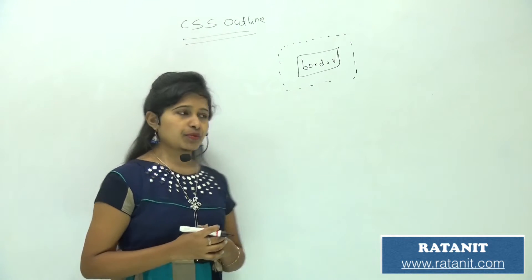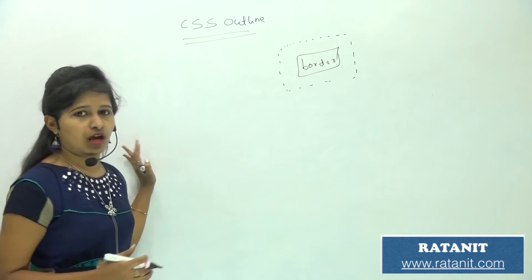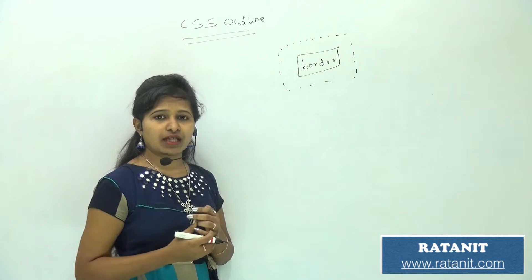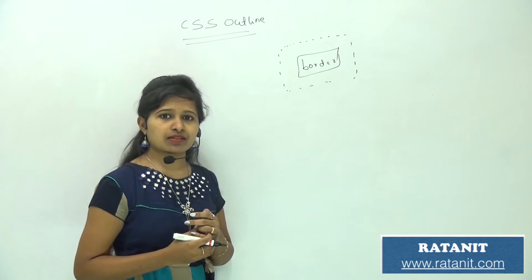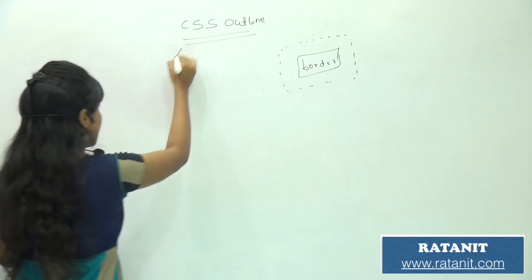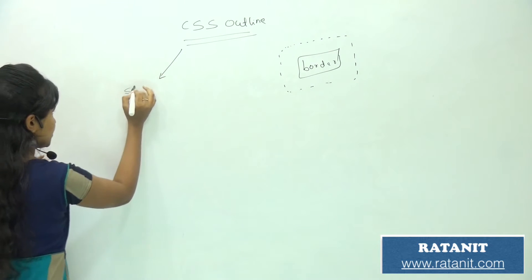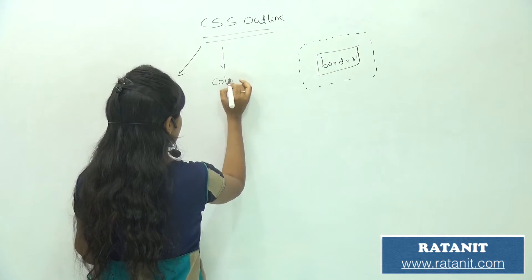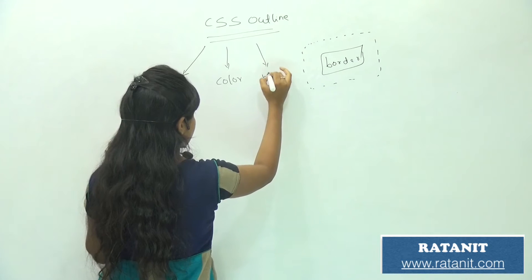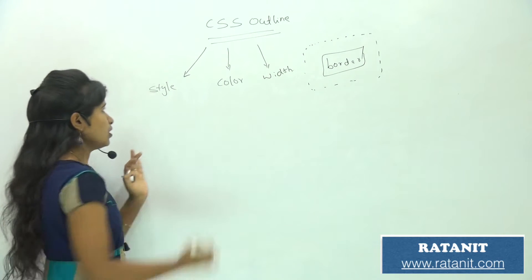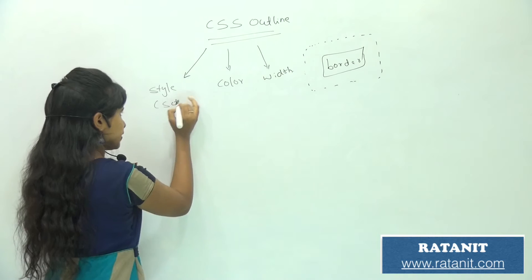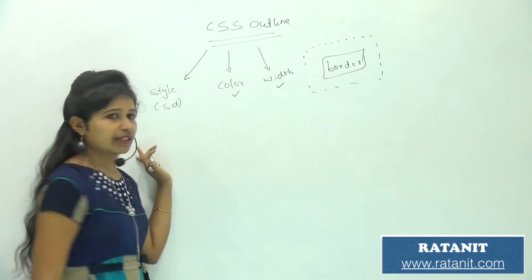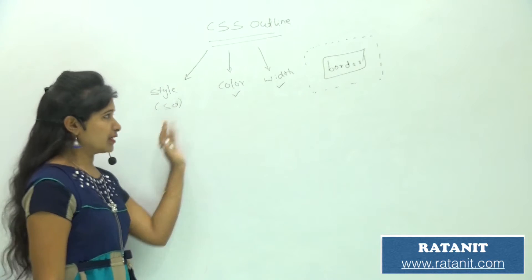First, what are the properties and values available for CSS outline? Same like border, it also has a style — the outline style — and it also has a color and a width. The style needs to be set first, and then only these two properties can be given to the outline. That is the real concept of outline, same like the border.